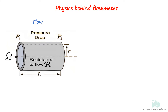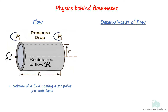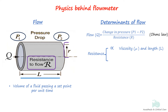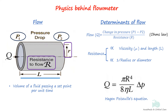Flow is a volume or amount of fluid — gas or liquid — passing a set point per unit time, usually measured in liters per minute. Pressure difference is the driving force that makes fluid flow. As fluid flows through the tube, resistance between the fluid and the vessel wall opposes the flow. This relationship is like Ohm's law, where flow is determined by the pressure difference and resistance. Resistance further depends on viscosity, length of the tube, and the radius or diameter. This relationship is explained by the Hagen-Poiseuille equation.